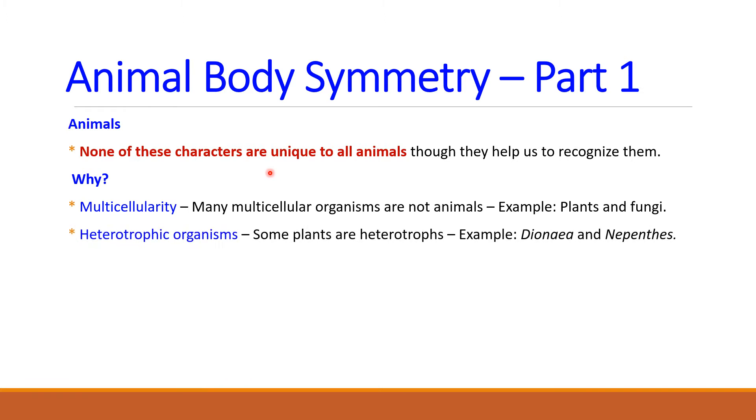Let's take the second character, heterotrophism. Some plants are also heterotrophic organisms. Let's take the first example, Dionaea or Venus flytrap. This plant is native to east coast of USA. It catches small arthropods like insects and arachnids. Let's take the second example, Nepenthes or monkey cups. Monkeys have been observed drinking rain water from Nepenthes. That's why botanists name these plants as monkey cups. Nepenthes also traps small insects. So, these two plant species are insectivorous. They obtain required nutrients from dying or dead bodies of trapped insects.